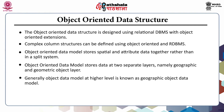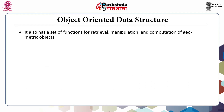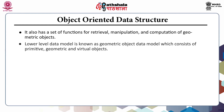Generally, the object data model at a higher level is known as the geographic object data model. The geographic objects, virtual objects, and a set of semantic spatial functions, retrieval functions, set functions, and aggregate functions are termed as geographic object data. It also has a set of functions for retrieval, manipulation, and computation of geometric objects. The lower level data model is known as the geometric object data model, which consists of primitive, geometric, and virtual objects.